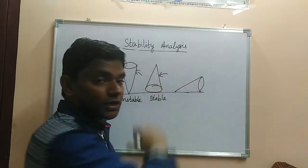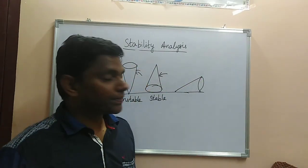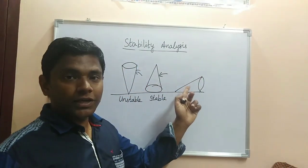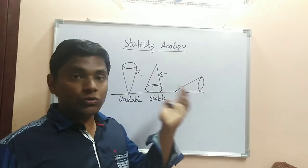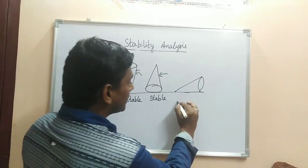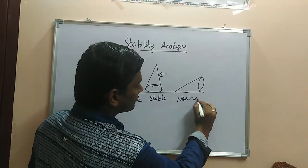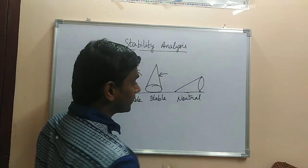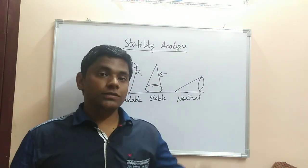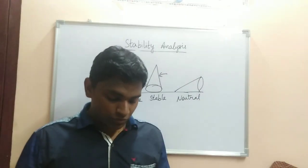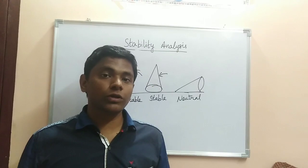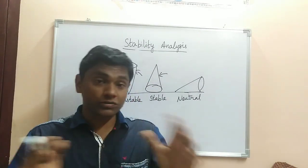That is why that is called stable equilibrium. The third type is called neutral equilibrium — even if you apply some force, there will be no change in position. These are the three types of equilibrium positions. Stability analysis is used to find out what type of equilibrium a particular object is in.